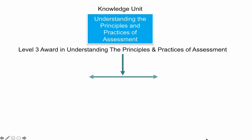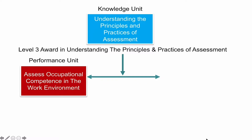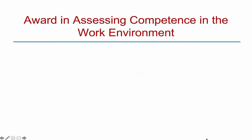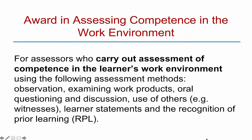Moving on to the Performance Units. One of the Performance Units is Assessing Occupational Competence in the Work Environment. If you do the Knowledge Unit and then this Performance Unit, that gives you a Level 3 Award in Assessing Competence in the Work Environment. This award is for Assessors who carry out assessment of competence in the learner's work environment using methods such as observation, examining work products, oral questioning and discussion, use of others such as witnesses, learner statements, and the recognition of prior learning. This is where you are actually doing assessments in the workplace of someone doing their job.